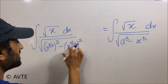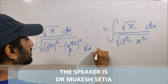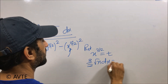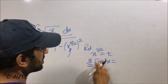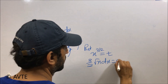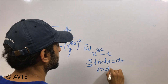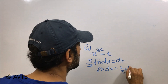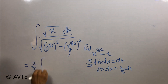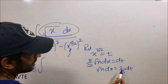We put x to the power 3 by 2 equal to t. The derivative is 3 by 2 into x to the power 1 by 2, which is root x dx, equal to dt. So root x dx equals 2 upon 3 times dt. We can put that in place of the numerator — this whole thing is now 2 by 3 dt.